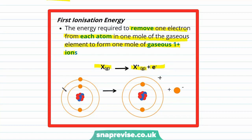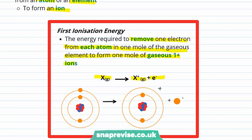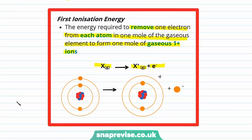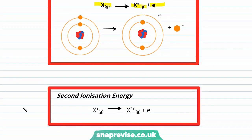I've visually represented this here. You can see we have our atom with three electrons — we're removing an electron from that atom to form a 1+ ion. We can have more than one ionization energy. In the case of the second ionization energy, we're removing one more electron from our 1+ ion, this time to form a 2+ ion.